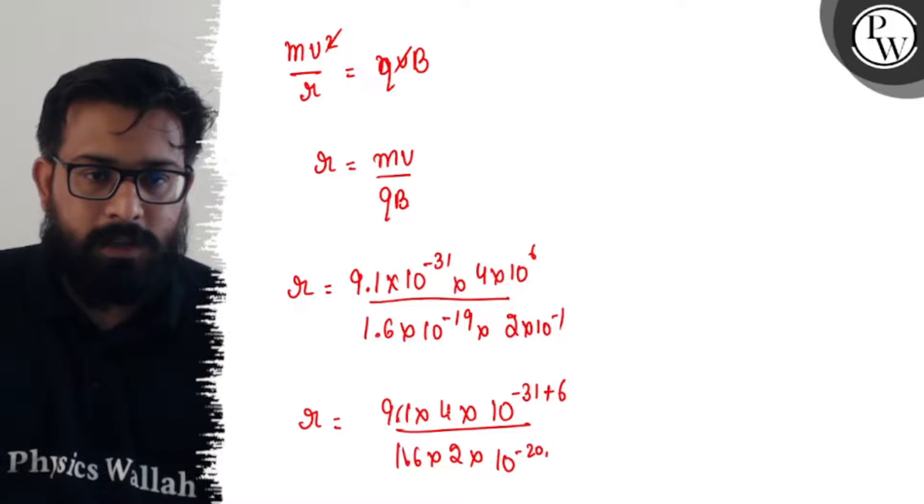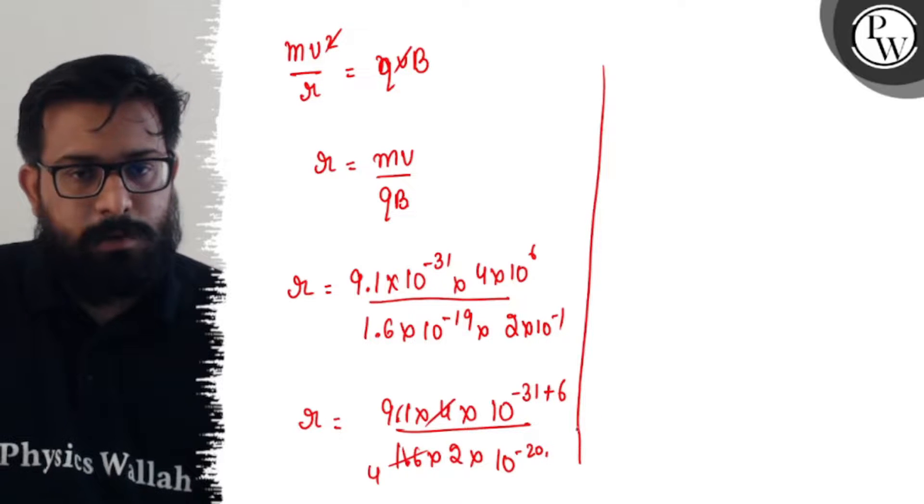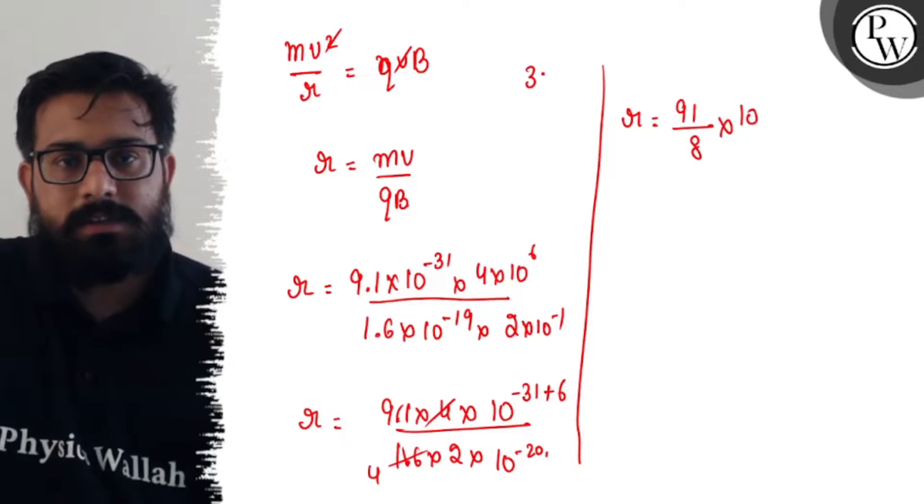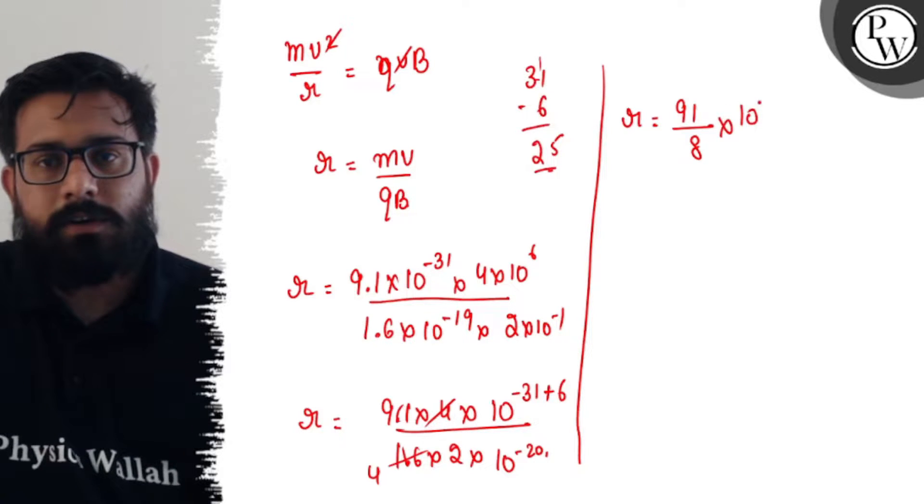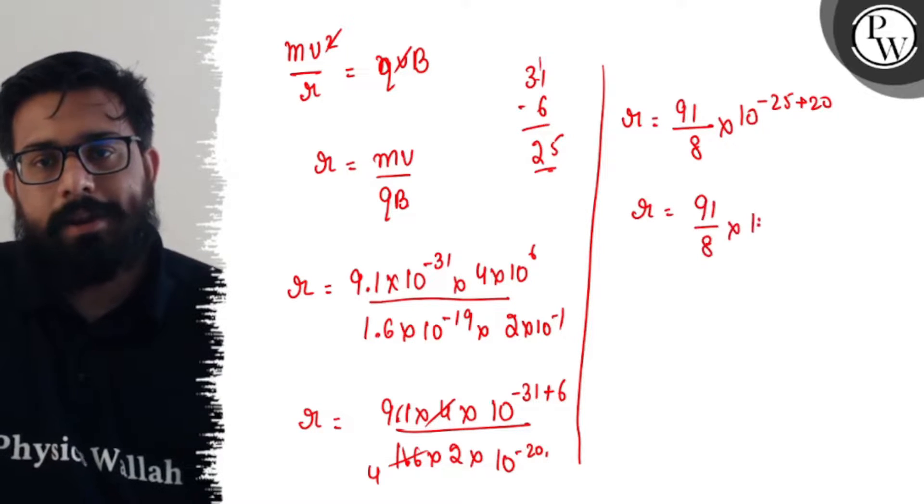Decimal to decimal, 4 and 16. We solve this part. The radius comes out 91/8 × 10^ - how much is it? 31-6 is 25, and this will be 25, so it comes out -25+20, so r comes out 91/8 × 10^-5.